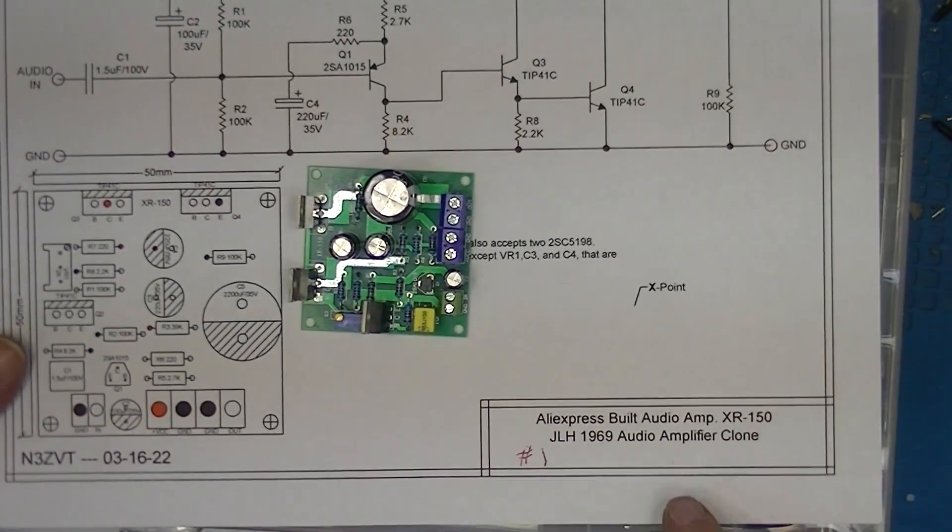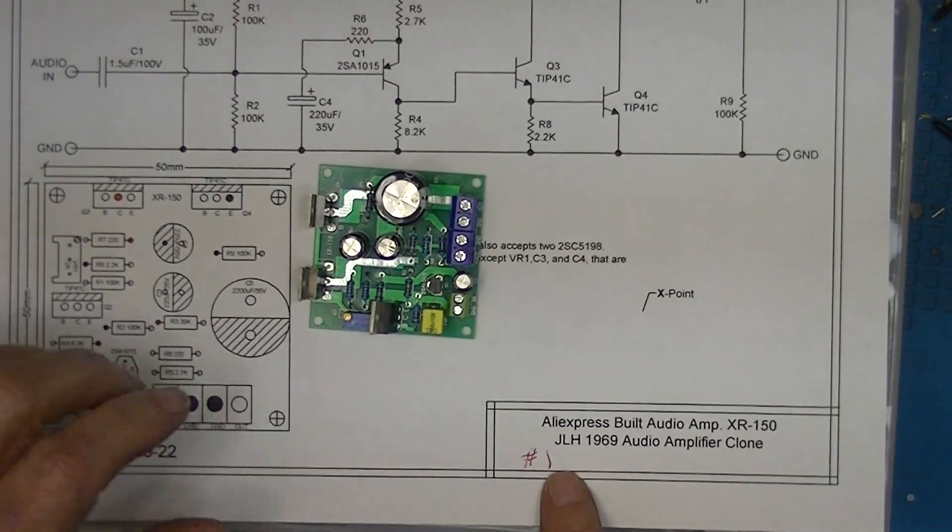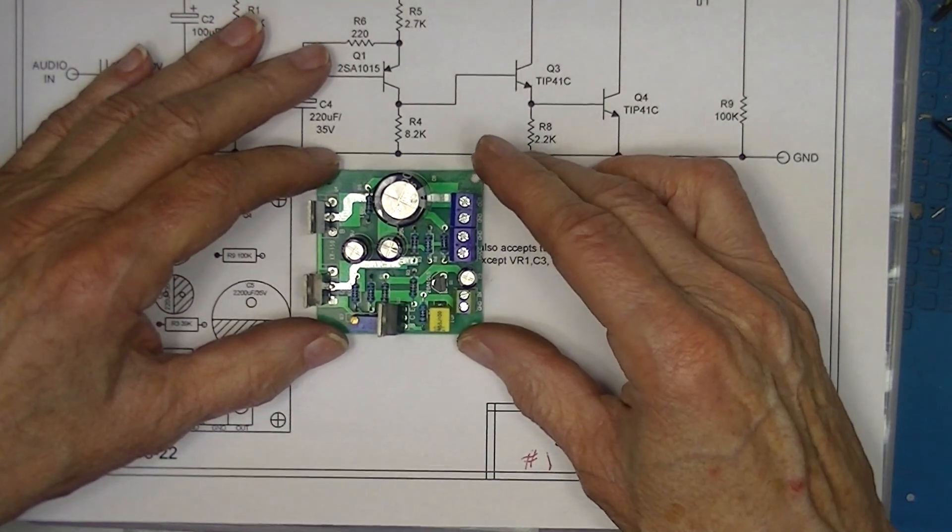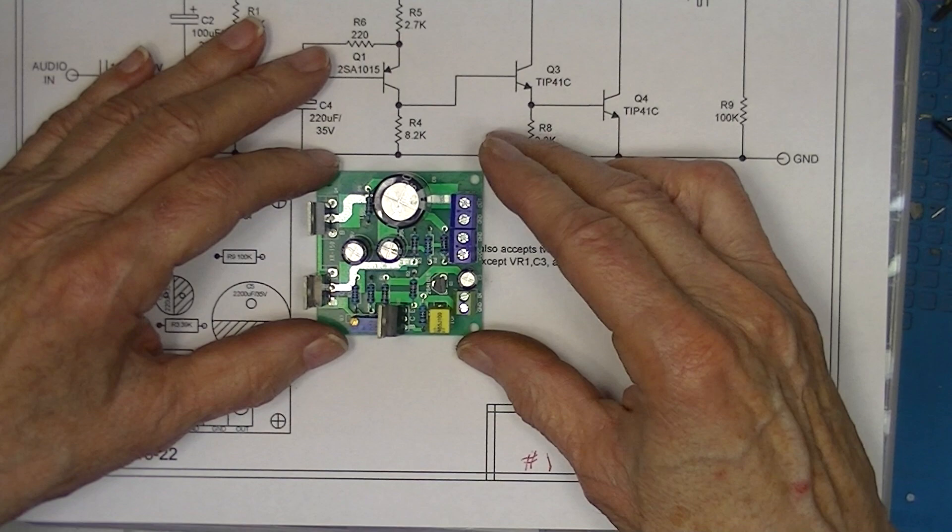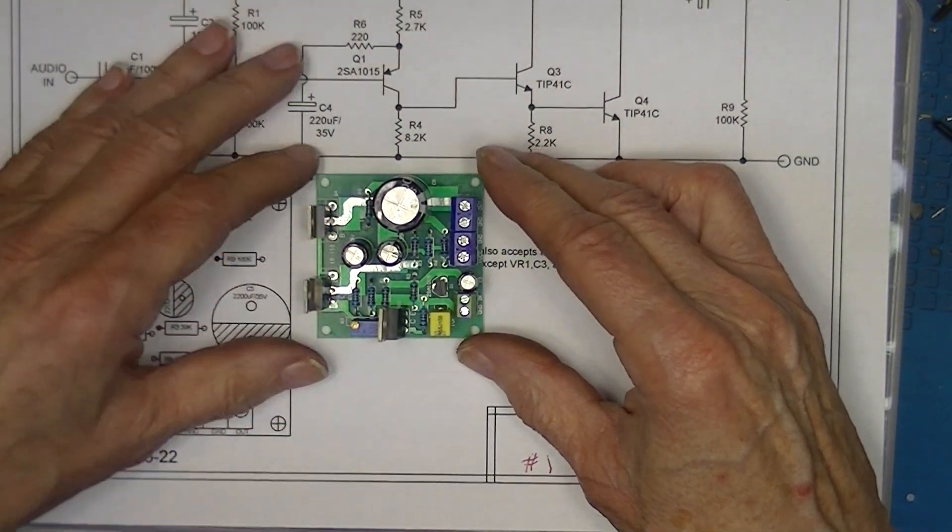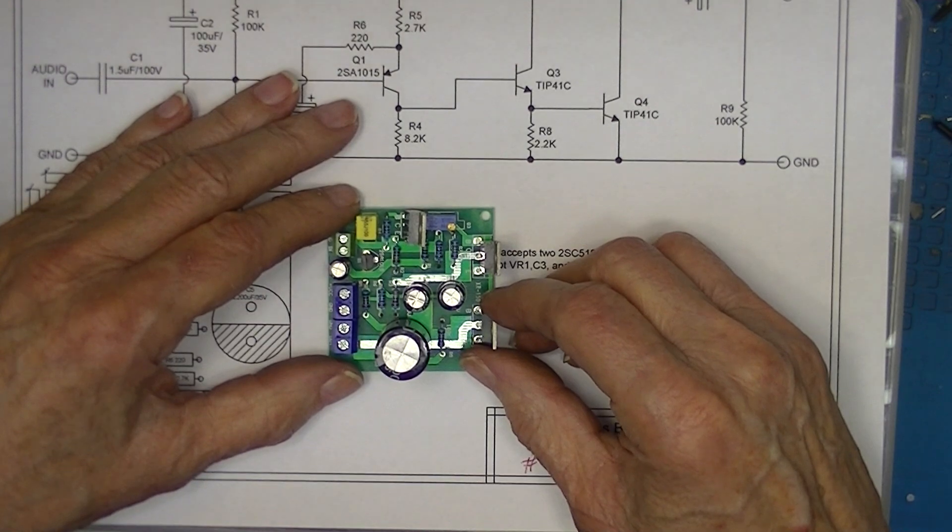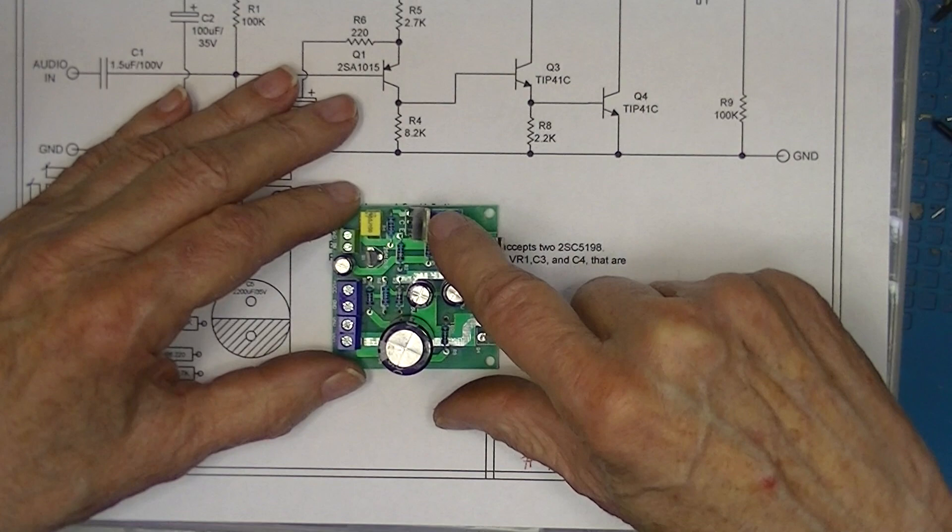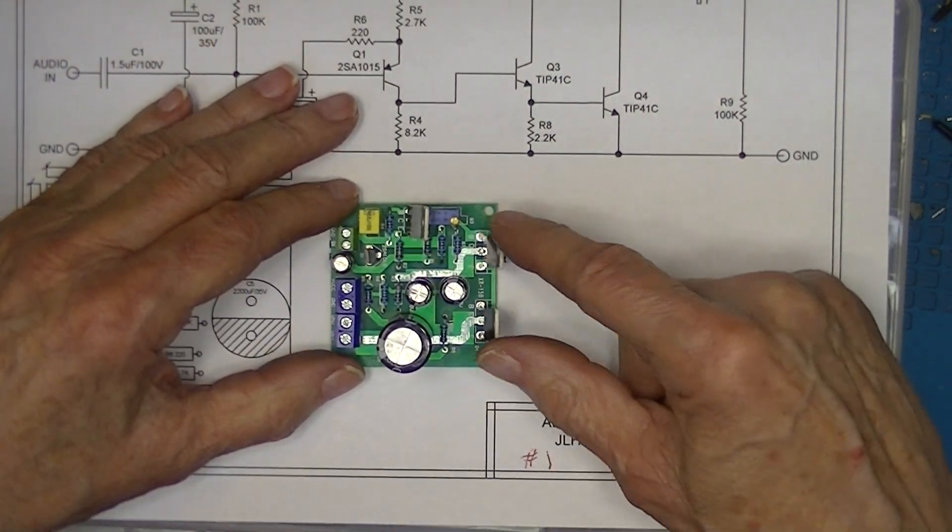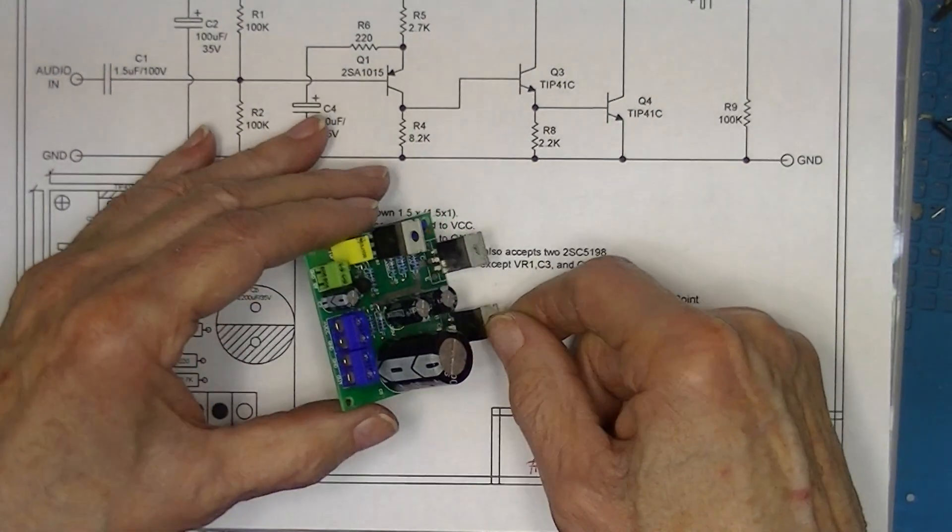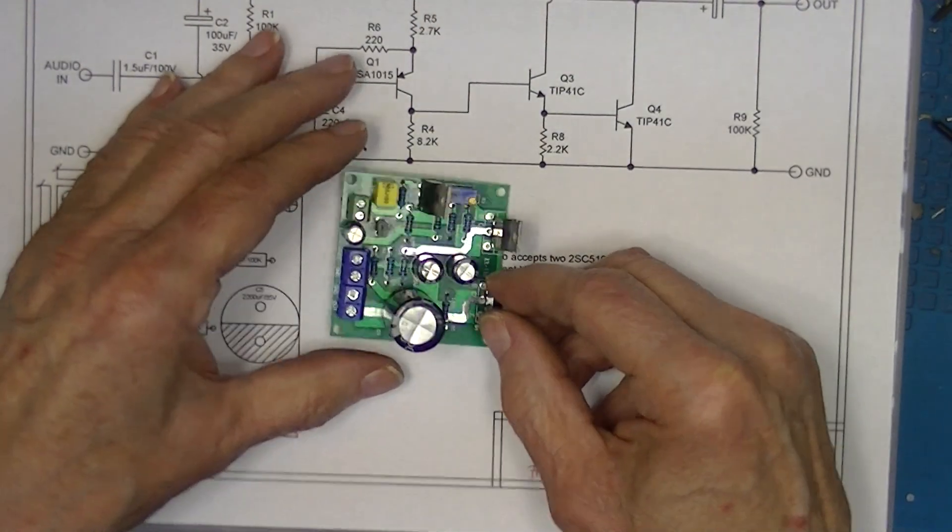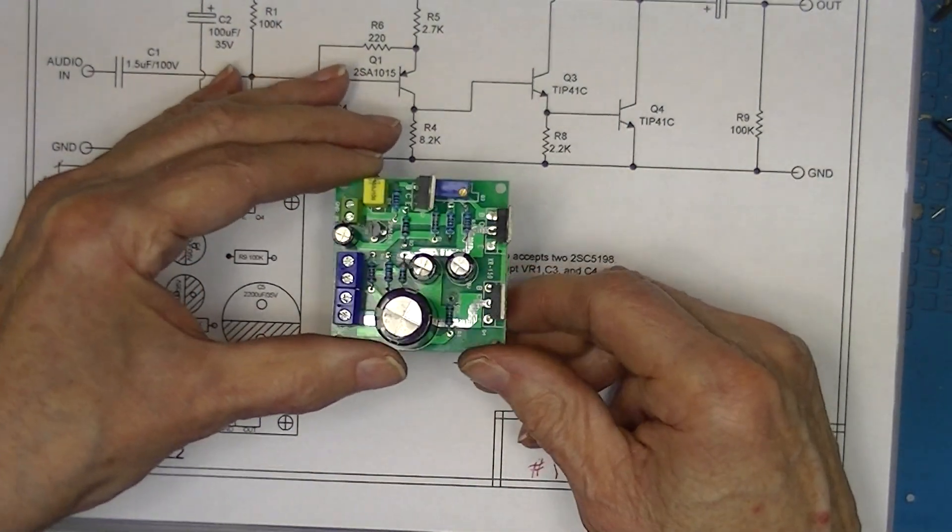I have accumulated four of these. I'm going to call them JLH 69 amplifiers. I got them from eBay and AliExpress. They all seem to follow the JLH format: an input capacitor followed by a PNP amplifier, followed by an NPN amplifier and then two more NPN amplifiers, a big output capacitor. Three of these amplifiers are in kit form and this is number one.